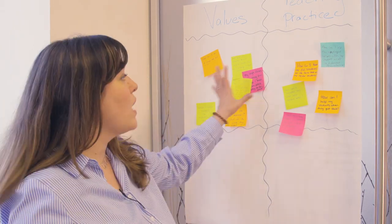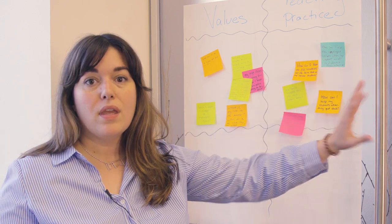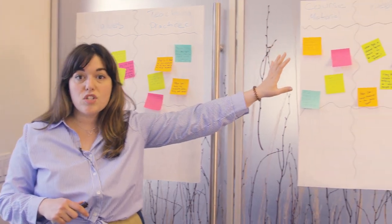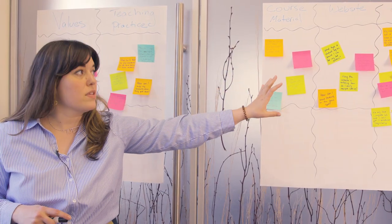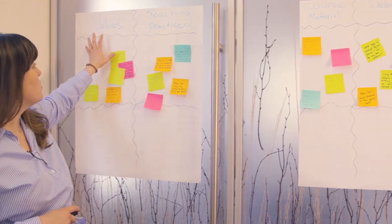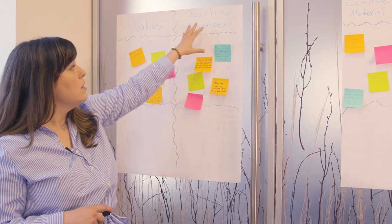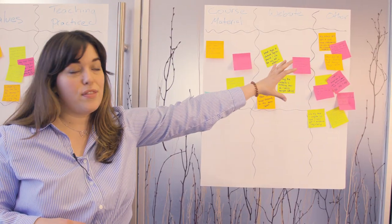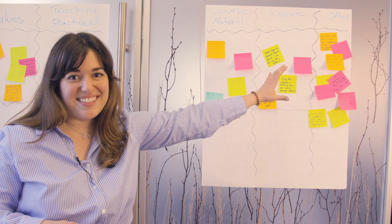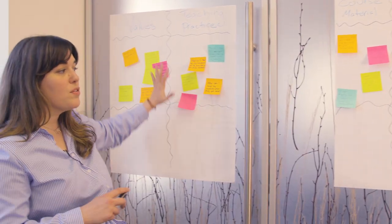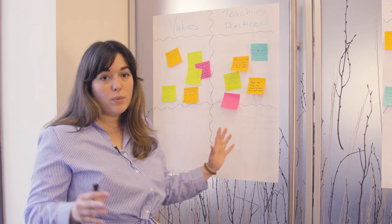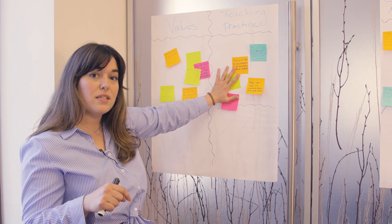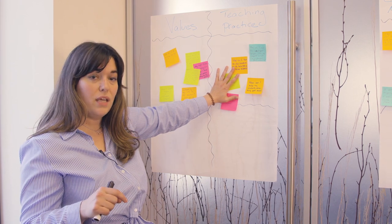At this point we've been collecting post-it notes from the teachers and I've gotten started organizing them. Right now that organization is really just clustered into the topics of questions we offered up to teachers at the start of this activity. The topics you're going to see here are: code.org values, teaching practice, course material, website, and 'other' — that's the catch-all for anything that doesn't fit.